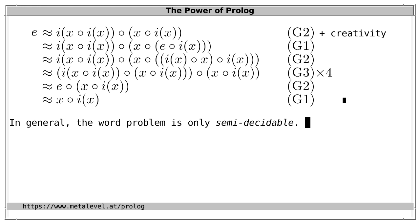One of the reasons for this issue is that the identities are not oriented, so we can apply existing equations in both directions. As we see from our example derivation, one and the same axiom can be used to make a term bigger or smaller depending on the direction used. It is not a priori clear how large we must make a term before we can reduce it to the intended target term. But there are also decidable cases of the word problem, and our overall goal is to decide the word problem if at all possible.